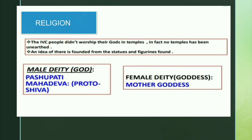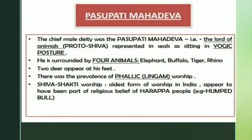Religious ideas are derived from statues and figures. There were both male and female deities — male deity was a god and female deity was a goddess. The chief male deity was Pashupati Mahadeva, a proto-Shiva figure represented on seals as sitting in a yogic posture, surrounded by four animals: elephant, buffalo, tiger, and rhinoceros, with two deer at his feet. The female deity was the Mother Goddess. There was also phallic lingam worship, and Shiva-Shakti worship appears to be the oldest form of worship in India, part of Harappan religious beliefs. The humped bull is an example of a sacred animal.